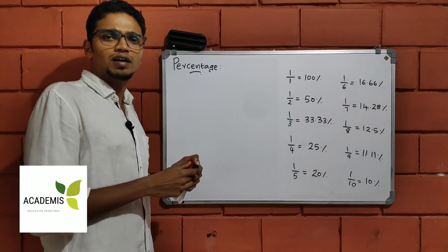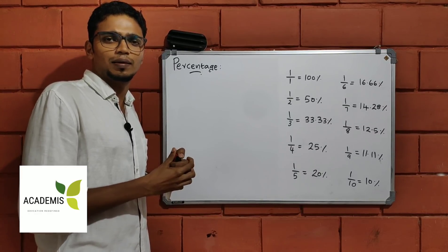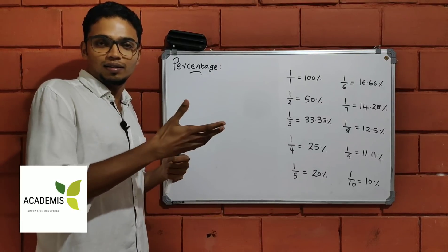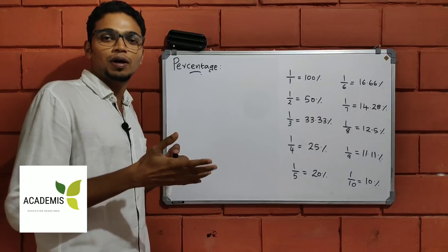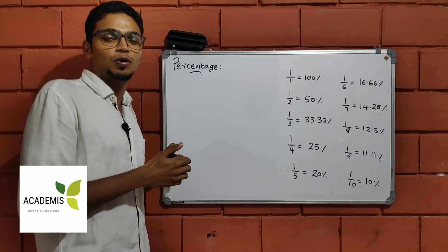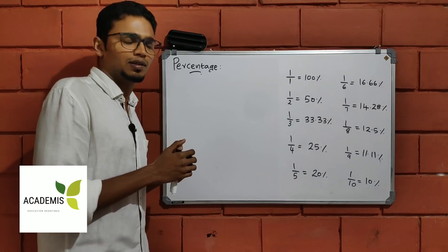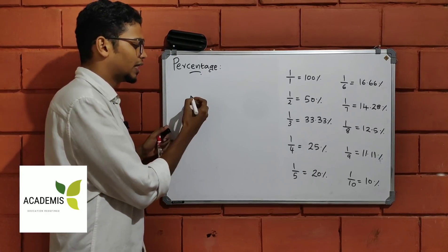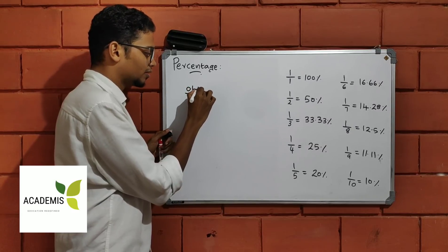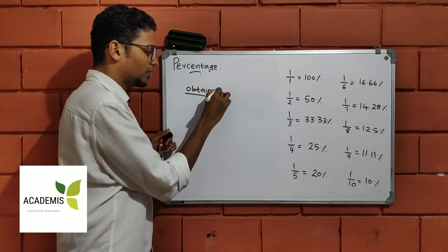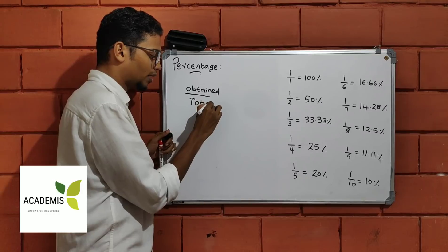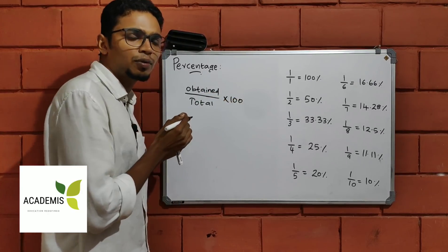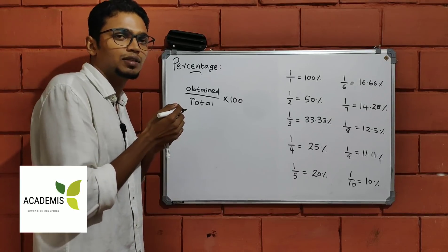What percentage is, we're going to talk about it in marks. Plus one percentage, plus two percentage. If you have degree courses, we're going to talk about it. In that situation, we're going to try the percentage. What we're going to do is: obtained marks divided by total marks into 100 — we calculate the percentage.